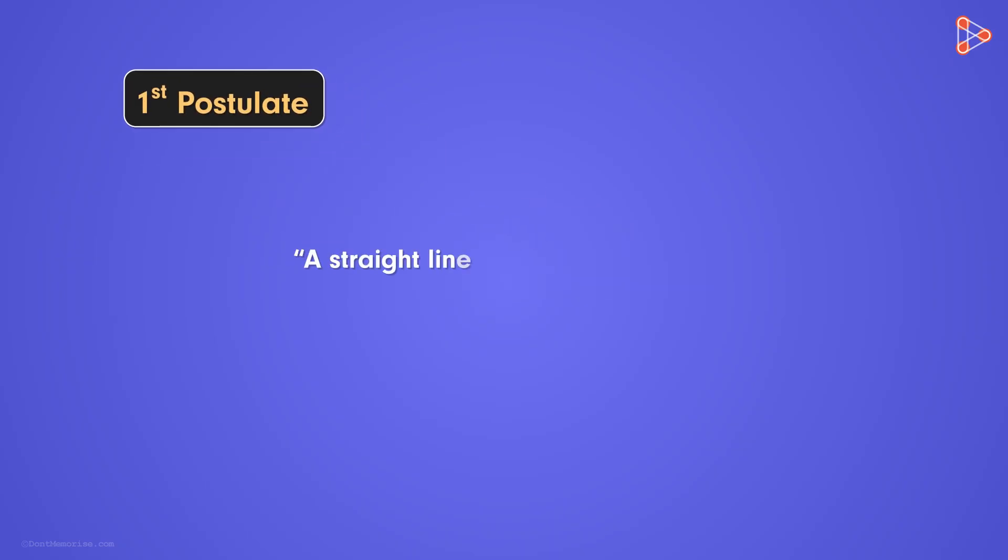It states that a straight line may be drawn from any one point to any other point. To understand this, suppose we have two points A and B separated by a distance.